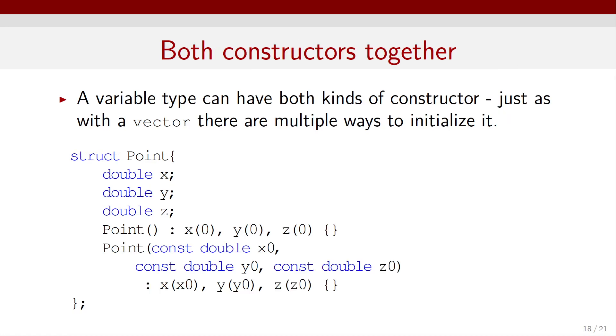We can also use both constructors together. A variable type can have both kinds of constructors. Just as with a vector, there are multiple ways to initialize it. So here, if I call a Point without arguments, it's going to initialize them to zero. But if I call a Point and use some arguments, then it's going to initialize that point with the arguments that I specify.